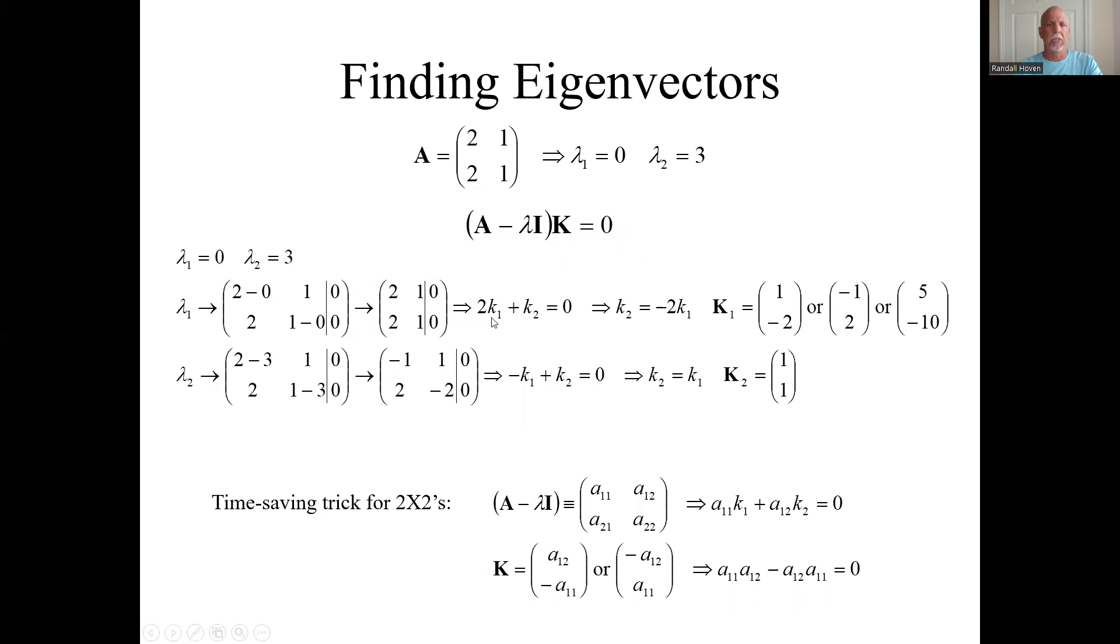And what does this mean? Two times whatever the first variable is plus the second variable equals zero. Bottom line is the same equation. And if you did all your arithmetic right up to here, these two equations should be equivalent results. What does this mean? Two k1 plus k2 equals zero. Now I'm saying big K, the matrix K, has these two elements: little k1 and little k2. This says little k2 is minus two k1.